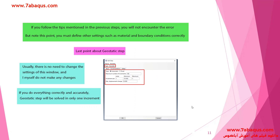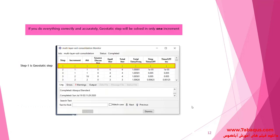If you observe all the mentioned points, you won't encounter any errors. However, you should also note that you should define other settings such as material or boundary conditions properly so you won't face any probable errors. The last point I would like to mention is regarding the settings for the geostatic step window. Normally you won't need to do any settings for this window, and I myself won't make any changes in its settings.